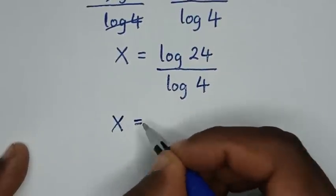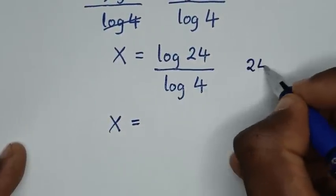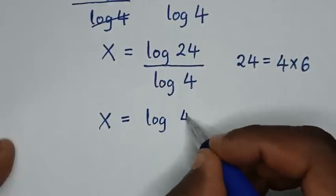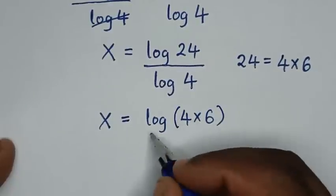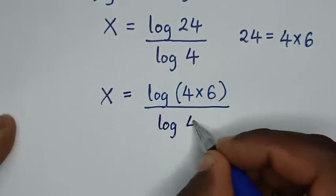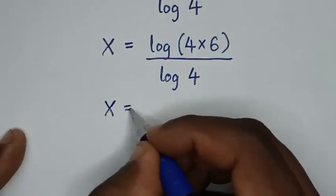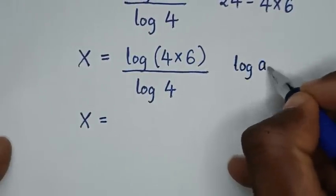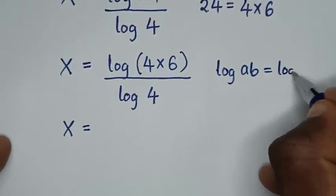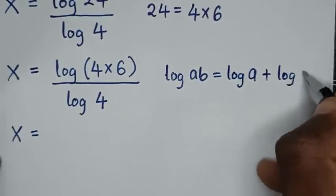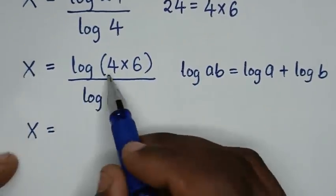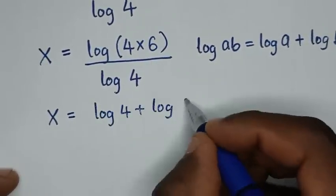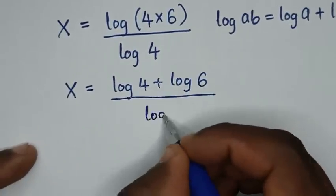Then x is equal to log of 24 over log of 4. Since 24 is equal to 4 times 6, log of 24 becomes log of 4 times 6. Applying the product rule, log of 4 times 6 is the same as log of 4 plus log of 6, all over log of 4.